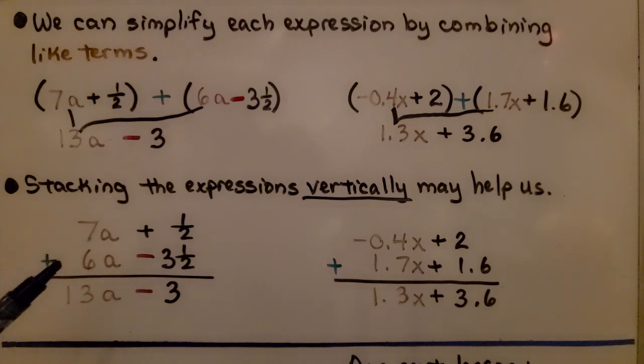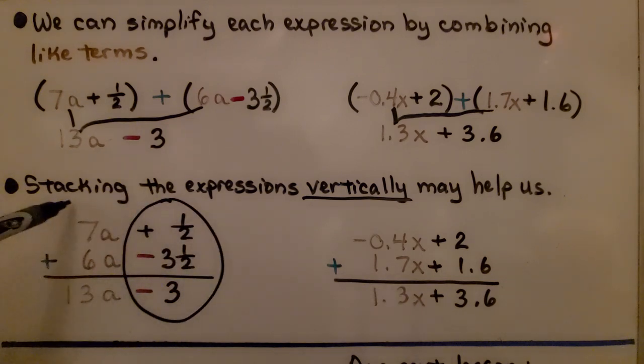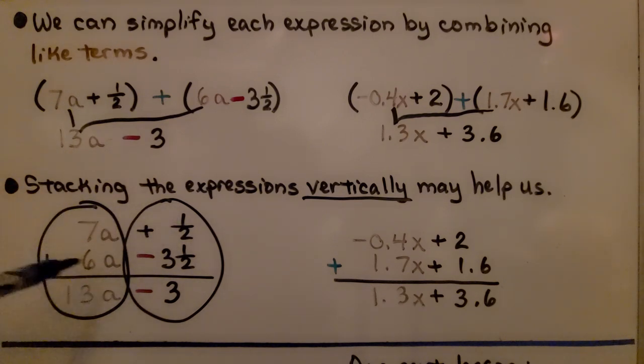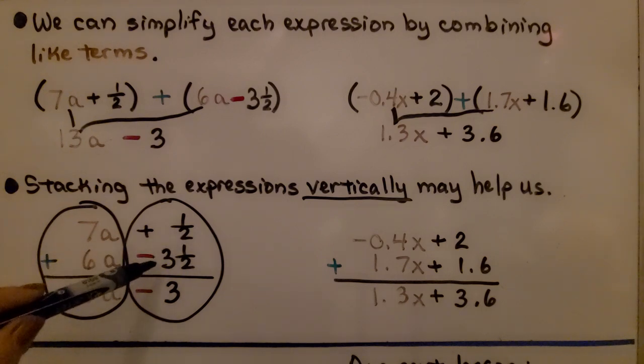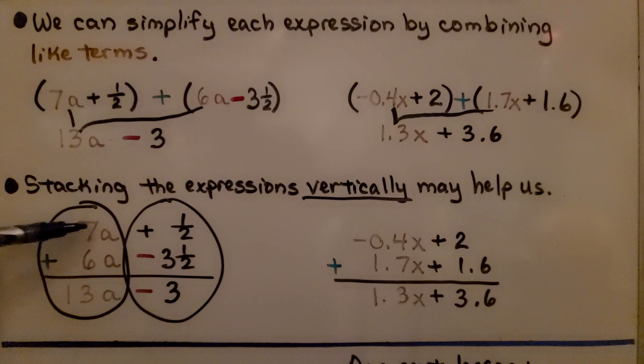Now, stacking the expressions vertically may help us. For this one, if we stacked them vertically, we would do this part and then we would do this part. That means we have a positive half added to a negative 3 and a half. That gives us a negative 3. And here we have 7a plus 6a. That's 13a.